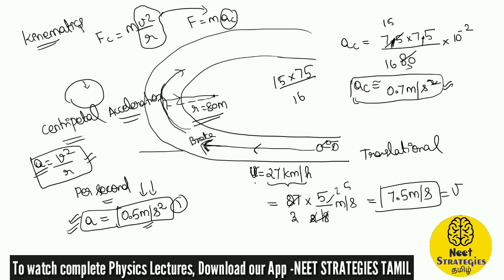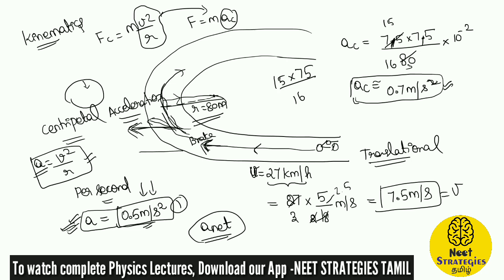Now, I will bring out the concept of net acceleration. When he applies the brakes, he experiences tangential or translational acceleration — the braking acts in the opposite direction. The tangential acceleration vector is tangent to the circle, while the centripetal acceleration is directed towards the center of the circular path. These are in different directions. In order to get the magnitude, we do a vector combination: root under (first squared + second squared).